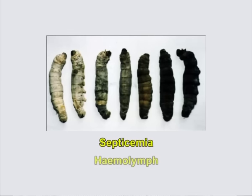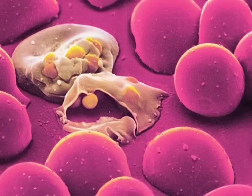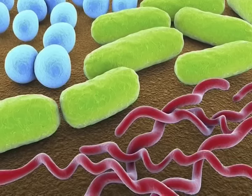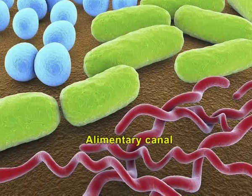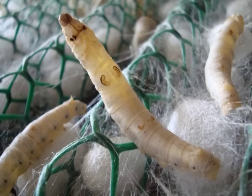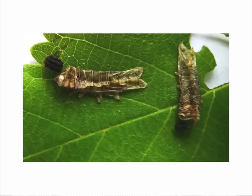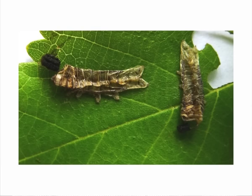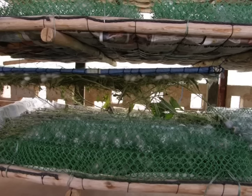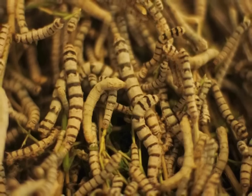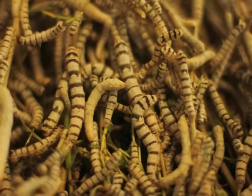Septicemia is a bacterial infection of the haemolymph. The causative organisms include Bacillus, Streptococcus, and Staphylococcus. Rarely, bacteria infecting the alimentary canal destroy the gut and enter the haemolymph, causing septicemia. Infection is through skin wounds. Symptoms include softening of the body, change of color to brown, larvae producing excreta in liquid form, prolegs losing their clasping power, and death of larvae. Control measures include good sanitation, removal of infected larvae, and careful handling of larvae to avoid skin wounds.